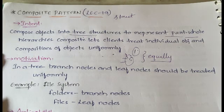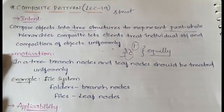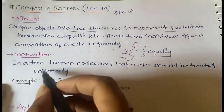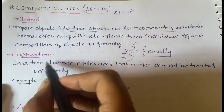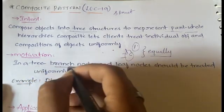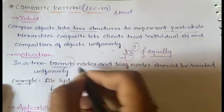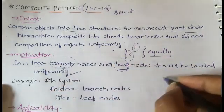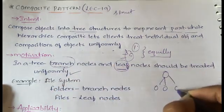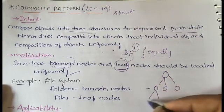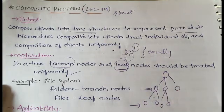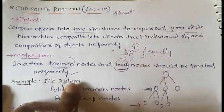Now let's see what is the motivation for this Composite design pattern. In a tree structure, the branch nodes (intermediate nodes) and the leaf nodes (the bottommost nodes) should be treated uniformly — in an equal way. So both levels of the tree should be treated uniformly, which is what the Composite design pattern tells us.